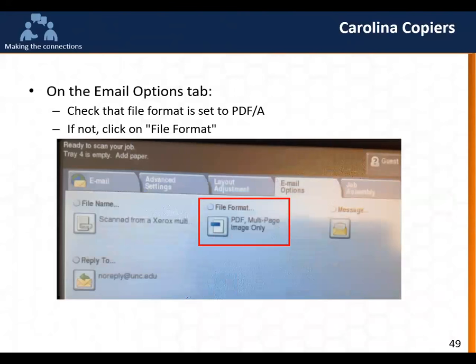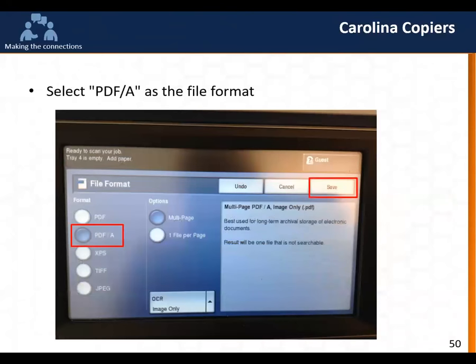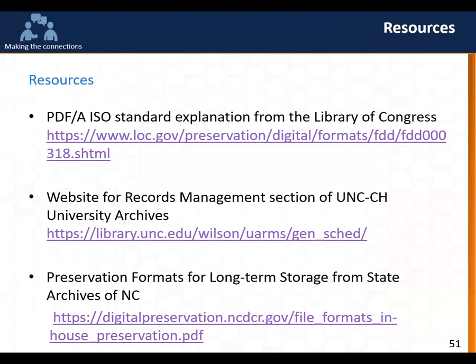For file format on the copier, you can click on it and choose among several different file formats. Make your choice and then select Save — otherwise it will go back to its default, which on our machine is PDF and not PDF/A. There are also some references to look at, like the ISO standard website, the records management website, and preservation formats.